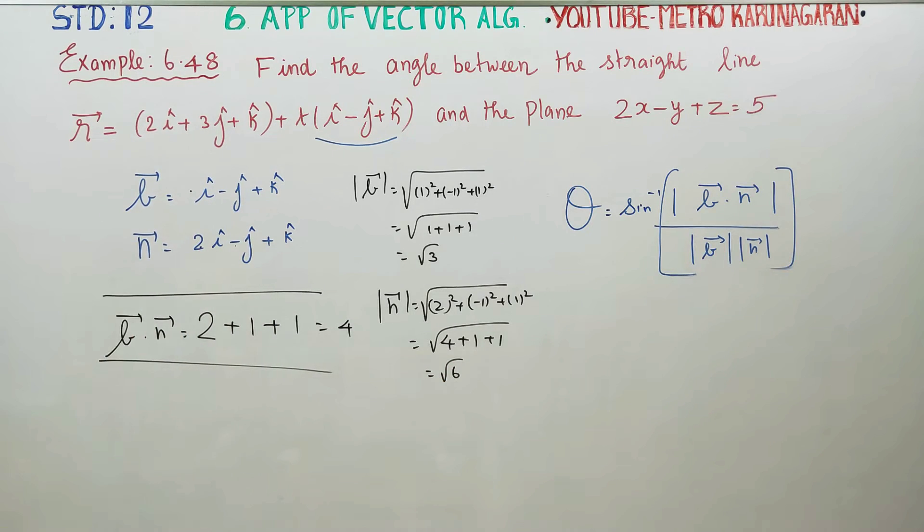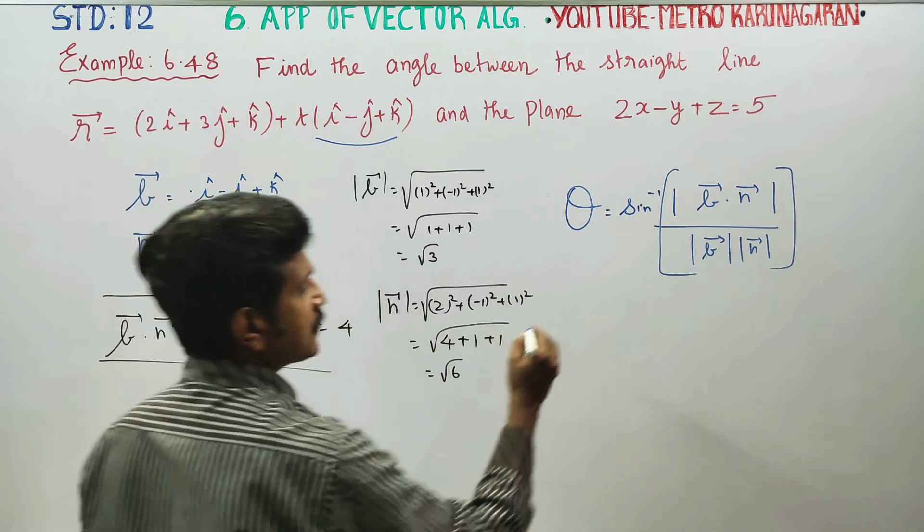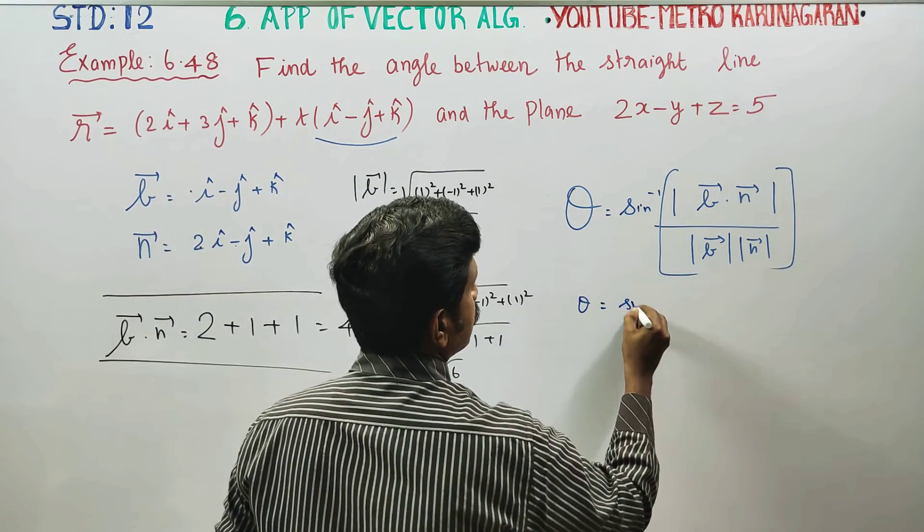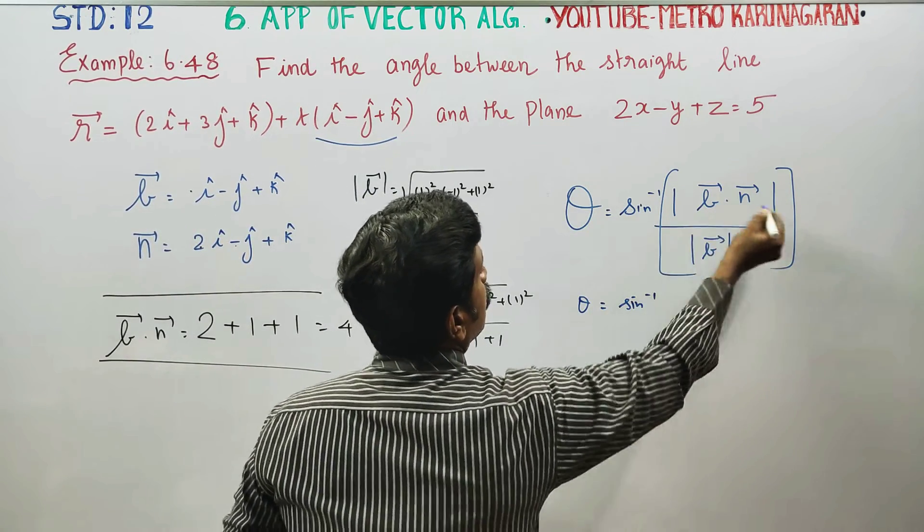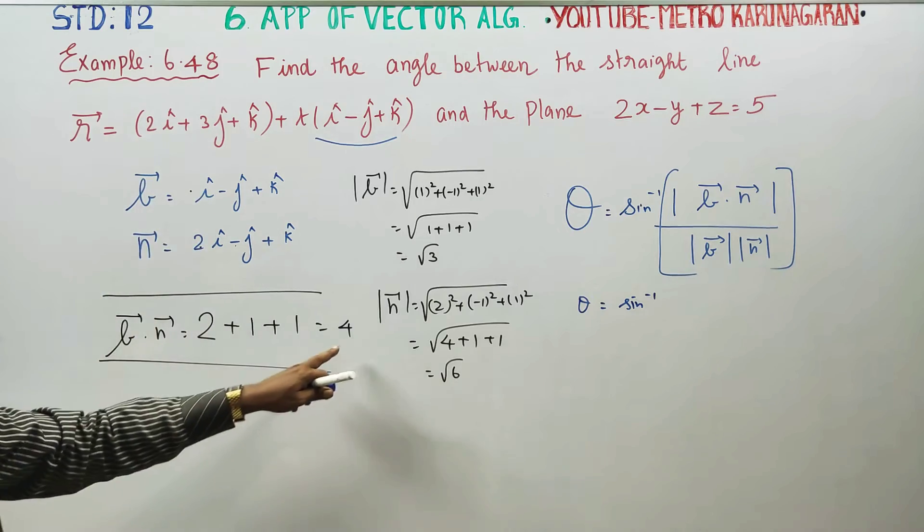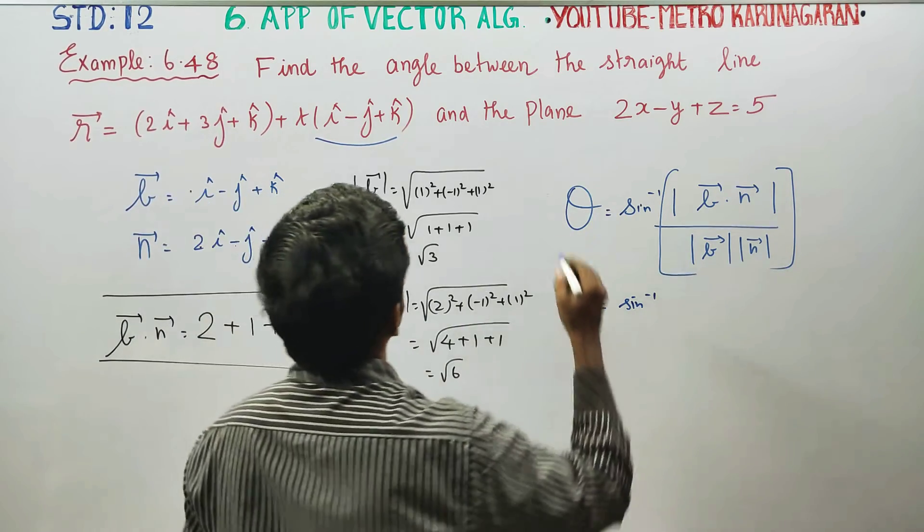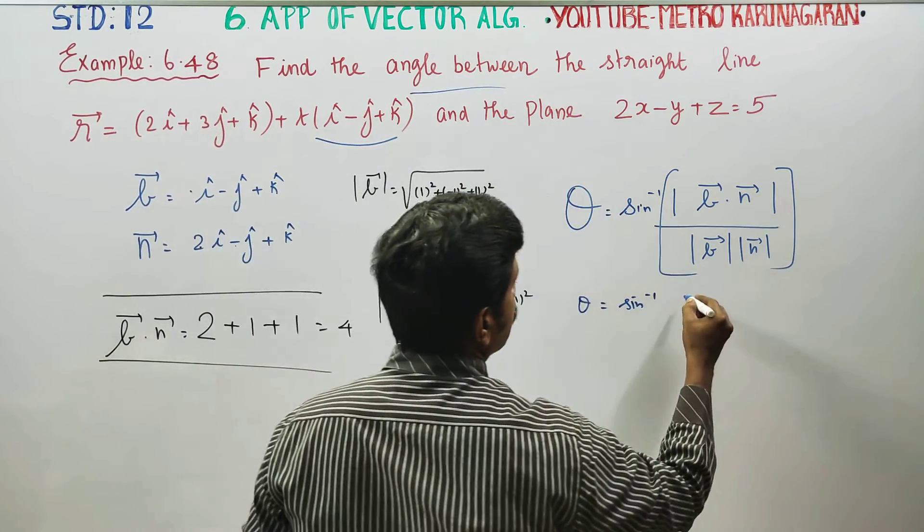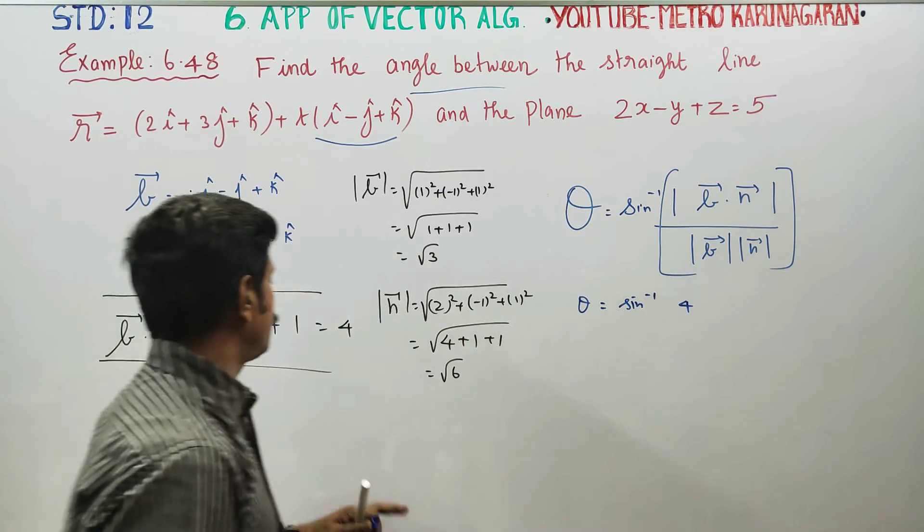All that equals theta equals sin inverse of modulus of b dot n. We take modulus to get acute angle. Find the angle between means acute angle, so we use modulus. b dot n is 4.